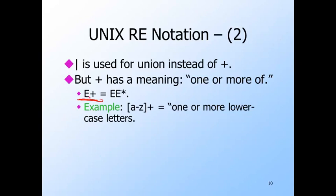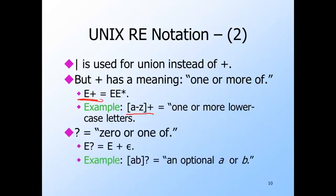So, for example, [a-z]+ means one or more lowercase letters. The question mark operator is also used like star but means zero or one of. That is, e? is shorthand for e plus epsilon. So, for example, [ab]? means an optional a or b. We would write it in our original notation as a plus b plus epsilon.